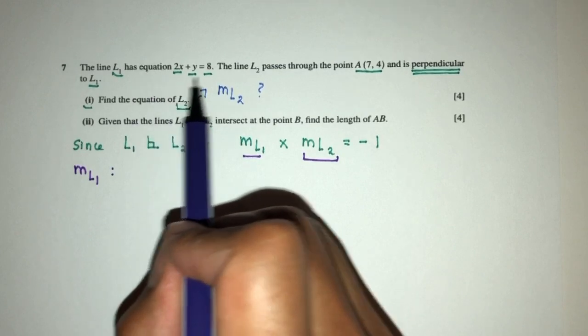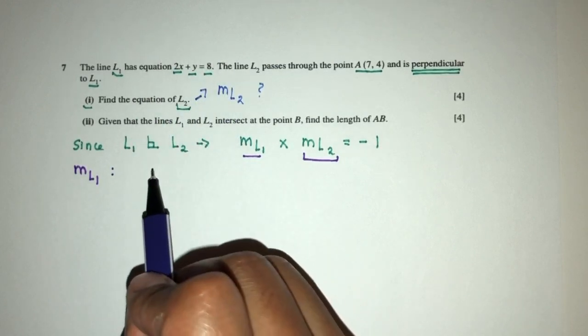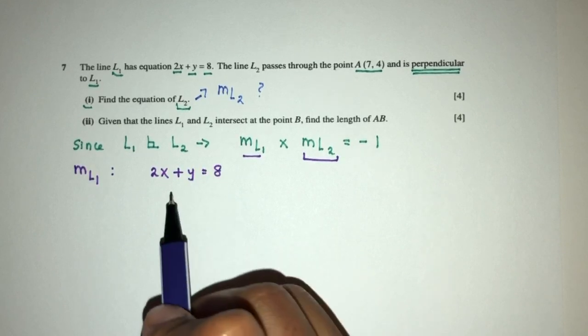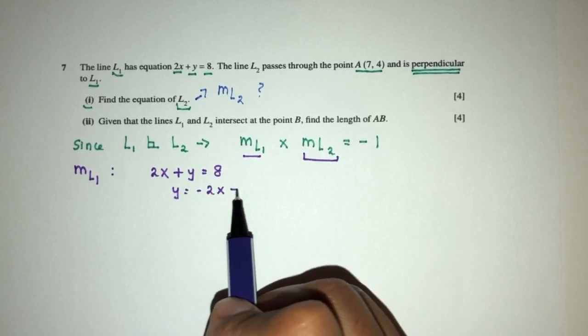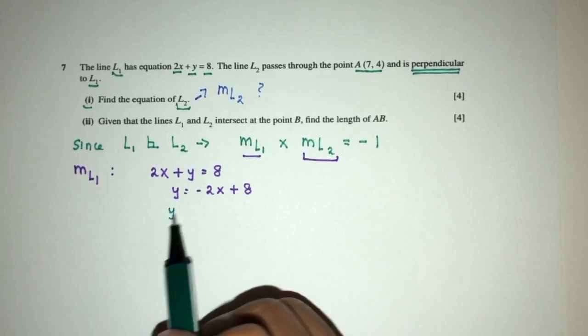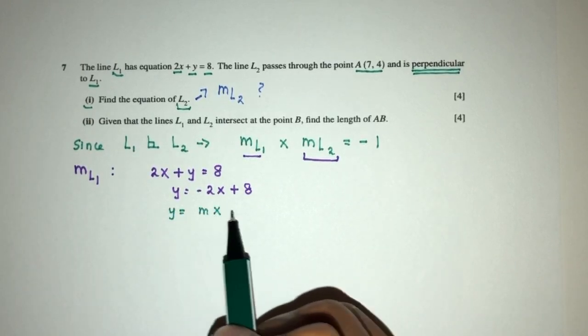Let's observe. The equation of L1 is given to you by 2x plus y equals 8. So y will be minus 2x plus 8. Now by comparison, y equals mx plus c.